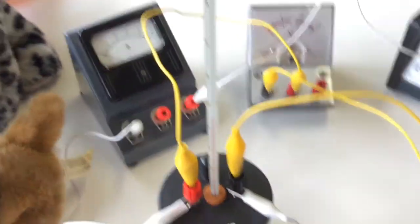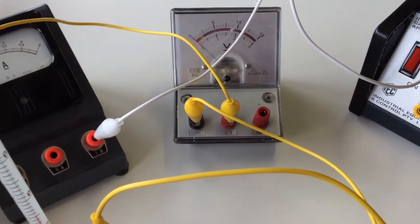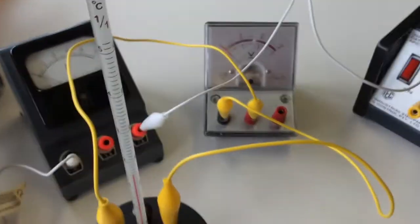So our ammeter is in series. Our voltmeter, if you look at the diagram, needs to be in parallel. It needs to be reading the voltage that is across the calorimeter. So each is the yellow alligator clips, and it's in parallel.